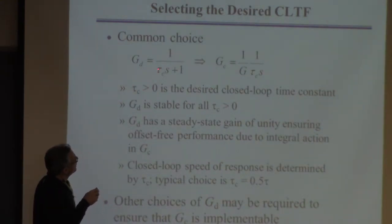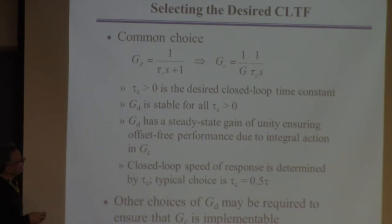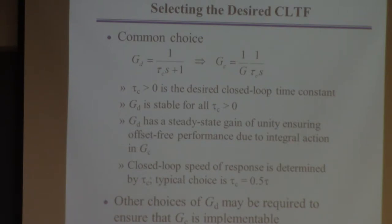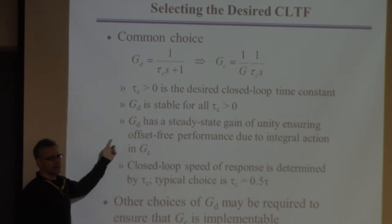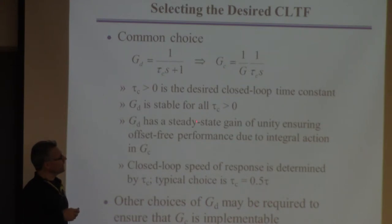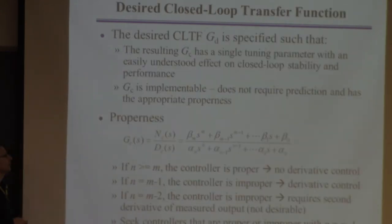Tau_c had better be positive, otherwise this response is first-order and unstable. It's a number you choose. The whole issue of stability is eliminated — this is guaranteed to be stable for any tau_c greater than zero. You don't have to worry about that problem. Also, it has a gain of one, so the controller is guaranteed to have integral action and is guaranteed not to have offset.